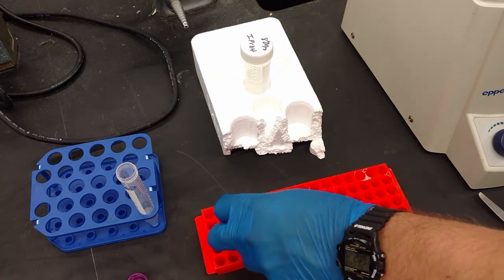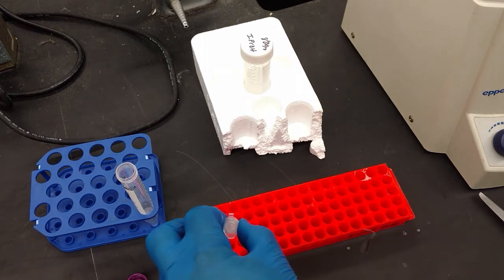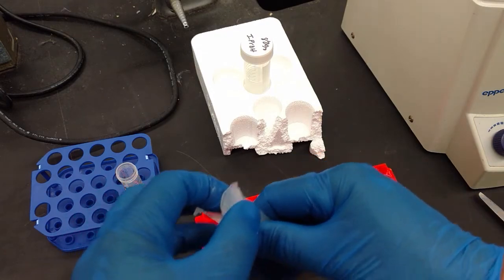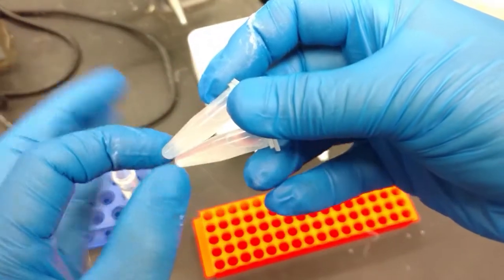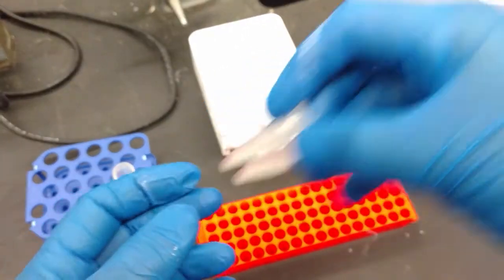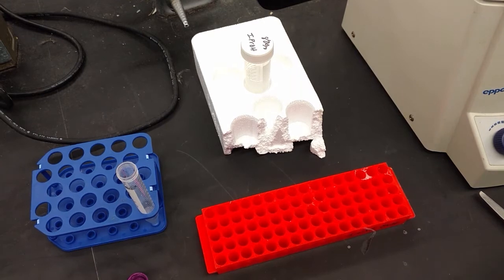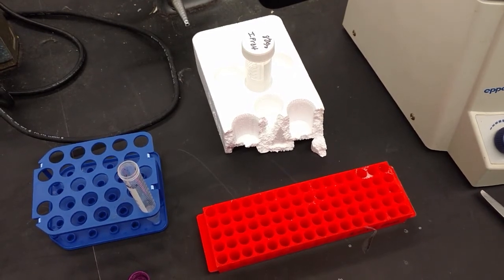So now you have your sample. It's all nice and gray, no lumps. And so now we need to spin it again and we're going to spin it for three minutes to bring the DNA back down into the pellet, to bring the resin back down into the pellet, and to pull the isopropanol up to the top. Again, make sure the lid's on.